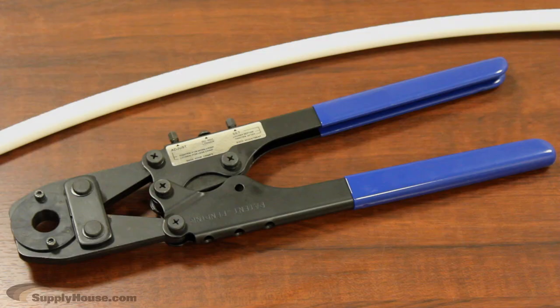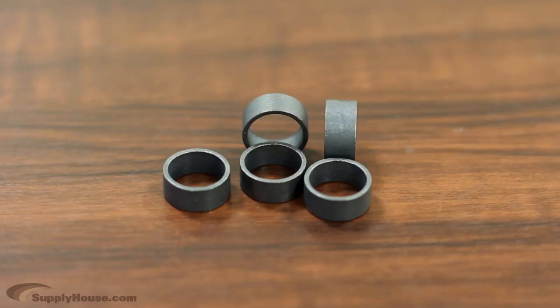To make a crimp connection, you will need a crimp tool, crimp fittings, and copper rings.